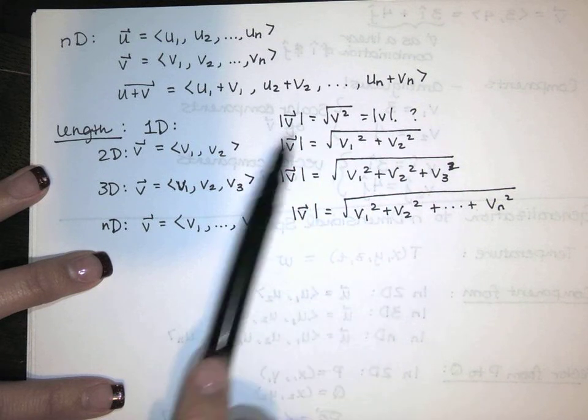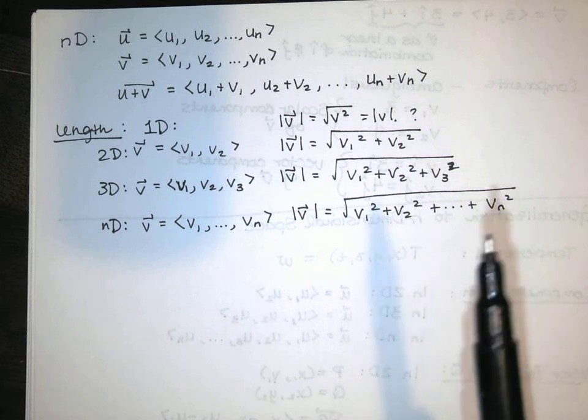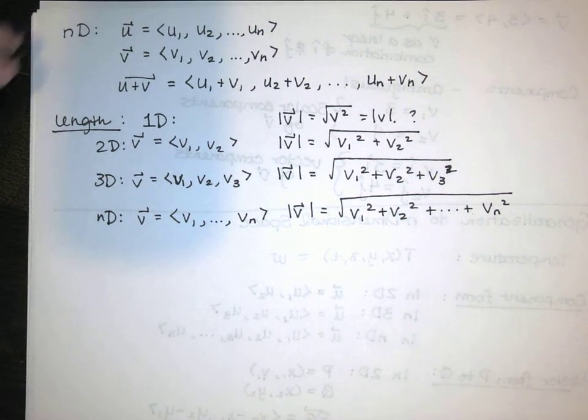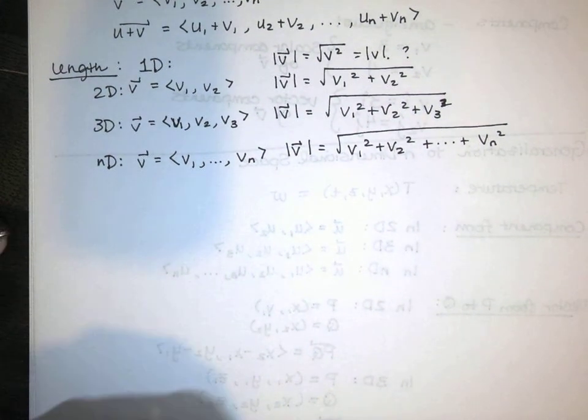Two components, square them, and add them, and take the square root. You've got three components, square them, and add them, and take the square root. No matter what you do, to find the length, you take the components, you square them, and add them, and take the square root. It doesn't matter how many dimensions you're in.